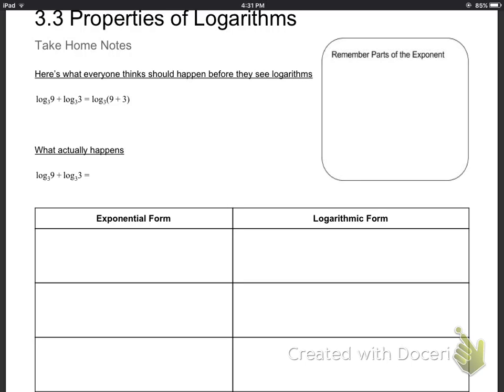First of all, I want to draw your attention to this equation right here: log base 3 of 9 plus log base 3 of 3. Everyone thinks, or if you haven't seen logarithms before, you might think that would be log base 3 of 9 plus 3. Adding on the outside becomes adding on the inside, makes sense right? But if we look closely, log base 3 of 9 is 2, because it's asking 3 to what power is 9. That's 2. And log base 3 of 3 is 1. You add those together, that becomes 3.